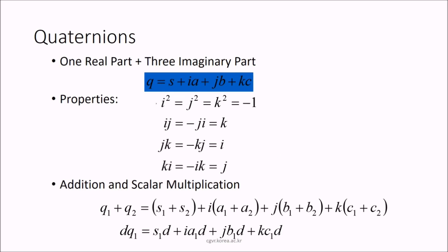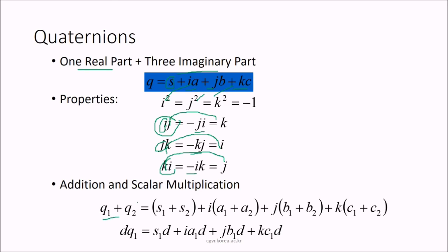Quaternions have one real part and three imaginary parts. Properties: i² = j² = k² = −1; ij = k, jk = i, ki = j; but ij = −ji, jk = −kj, ki = −ik (anti-commutative). Addition: add the scalar parts (s1+s2) and corresponding vector components (a1+a2, b1+b2, c1+c2). Scalar multiplication: multiply d everywhere through the quaternion.